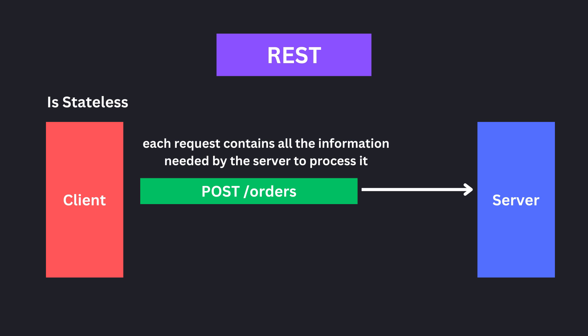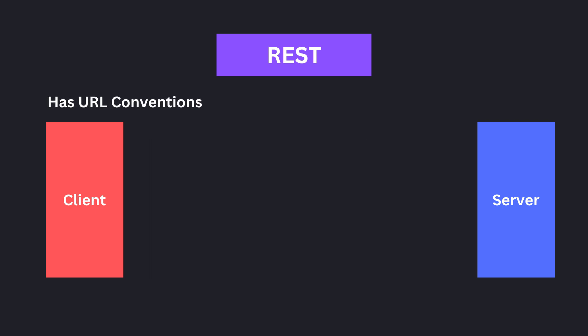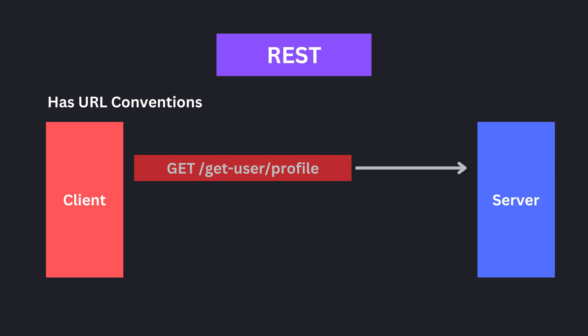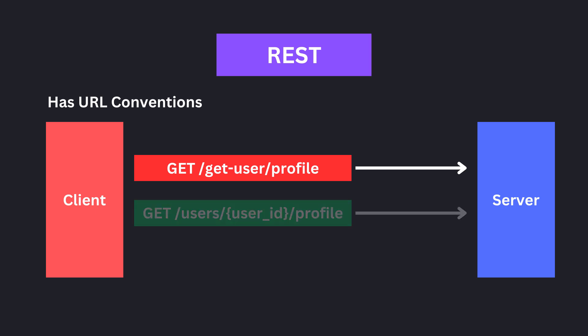This makes them highly scalable, as they can handle large volumes of requests without being burdened by session management. One of the main principles of RESTful URL naming conventions is to use nouns instead of verbs in the URL path. For example, instead of using a URL like get-user-profile, it is more appropriate to use a URL like users/userID/profile to fetch the user's profile.